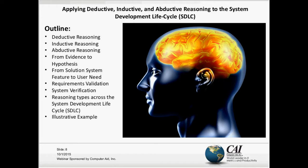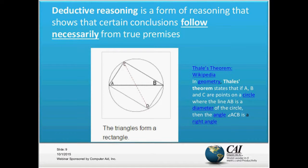Our first type of reasoning — deductive reasoning — is probably the most common one. Anyone who's been through geometry or any kind of basic math class would have been exposed to deduction. What deductive reasoning says is that a certain conclusion or set of conclusions follow necessarily from true premises.